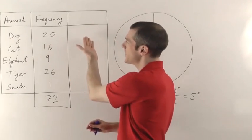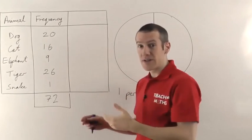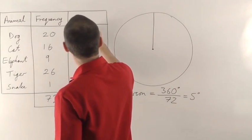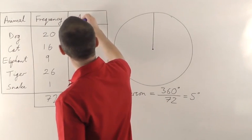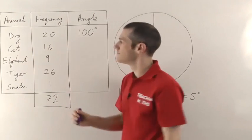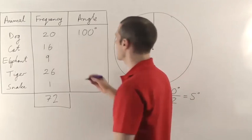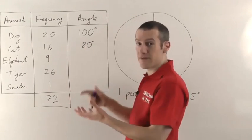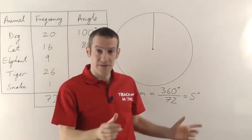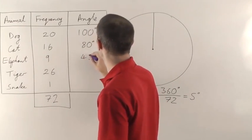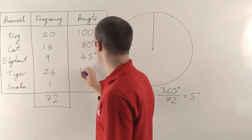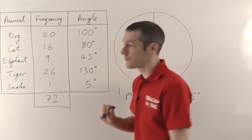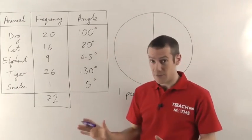So the dog, 20 people went for dog, 20 lots of 5, well 5 20s are going to give you 100, 100 degrees. So this final column is for working out the angle. Now usually you just do this on the calculator, I can probably just do this in my head, but you just times each of these by 5 because each person is 5 degrees. So 9 times 5 is 45, 26 lots of 5 is going to give you 130, and 1 times 5 is 5.